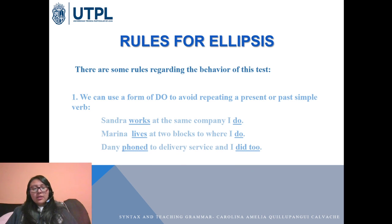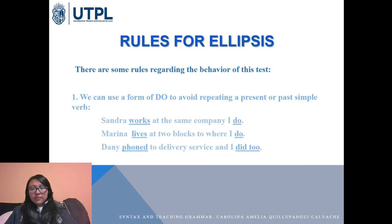We show the voice using the same verb in a coordinate clause using 'did' and 'too.' For example: 'Danny phoned the library servers and I did too.' So we use 'did too' to avoid repeating the full verb phrase.